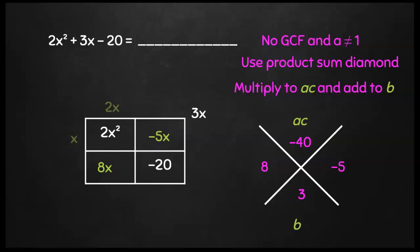I get x and 2x and then 4 and 5, making sure that everything checks out. You have your answers as 2x minus 5 and x plus 4.